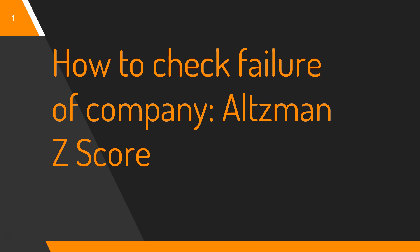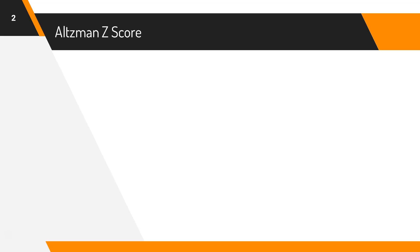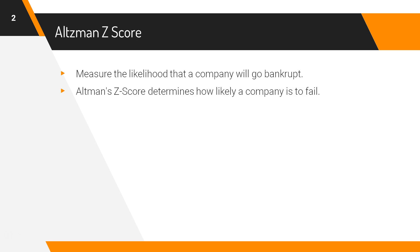Worldwide, a lot of companies are going bankrupt. However, bankruptcy need not be an unannounced disaster. There is a way to predict bankruptcy, and the way is known as the Altman Z-score — a bankruptcy predicting tool that measures the likelihood that a company will go bankrupt. If you can know whether a company is going to become bankrupt in the future, you obviously won't invest in it. So the knowledge of Altman Z-score may save you from possible losses in future.